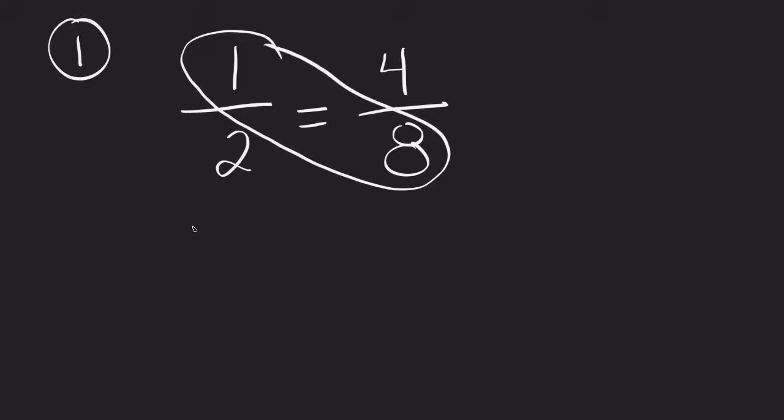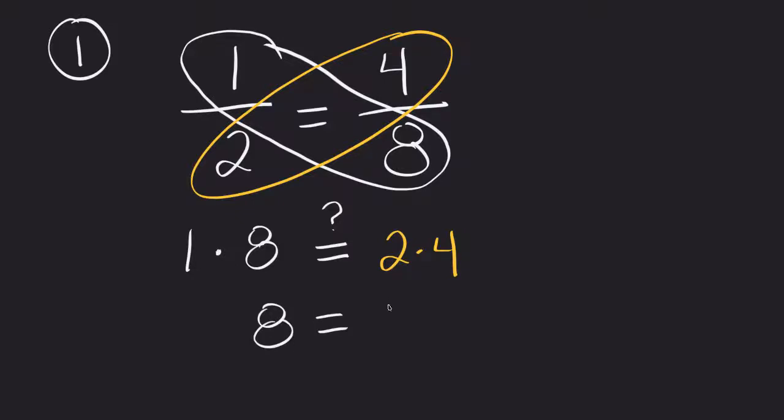So if I gave you something like this, let's do 1 half equals 4 eighths. Now I want to know, are these fractions equal to each other? Well the easiest way to kind of check that is to check the extremes. So I'm going to do 1 times 8. And I want to know, is it the same as if I multiply the means, or the 2, times the 4. So 1 times 8 gives me 8, and 2 times 4 gives me 8. So this is true.